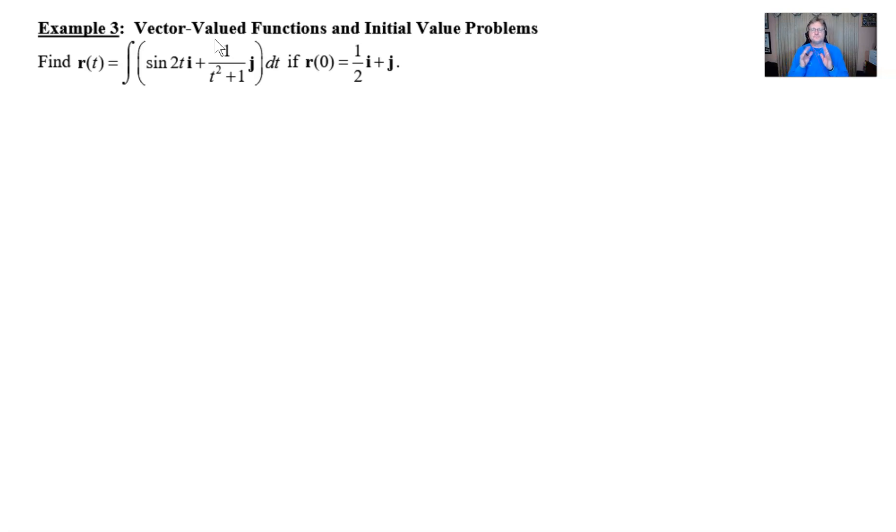So this ought to be familiar to you if you remember some work that you did in AB, that you were able to find the c value for a definite integral if you were given a point that lies on the curve. This is very similar, except we're given a specific vector in this particular case at a certain point or a certain time, if you will.